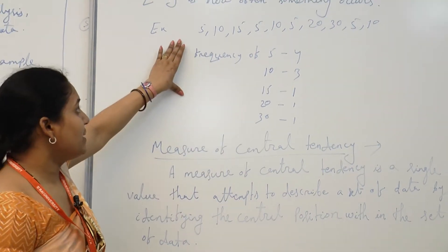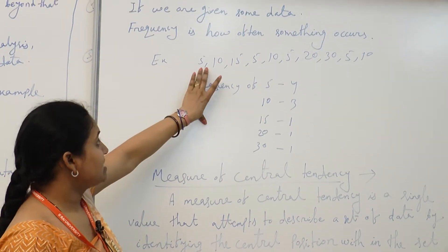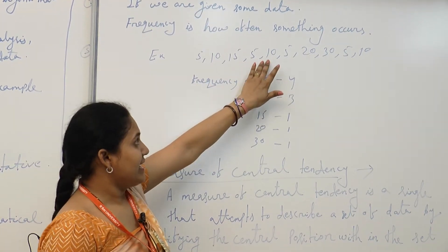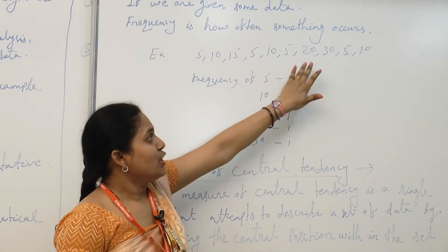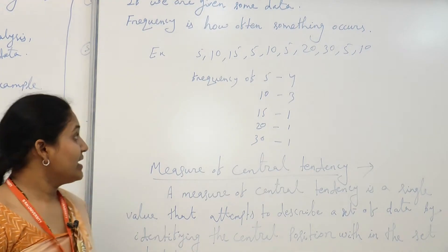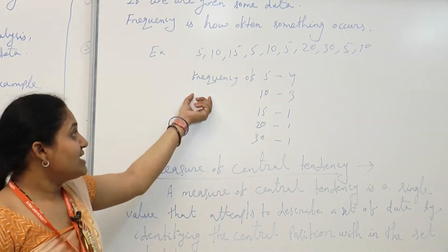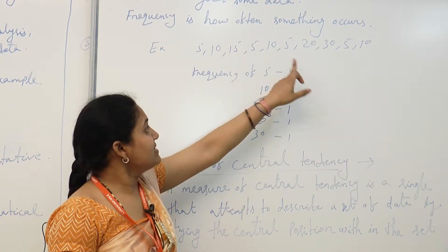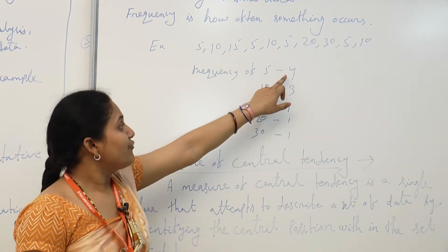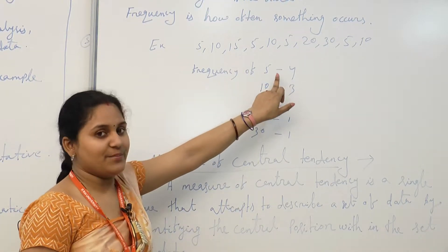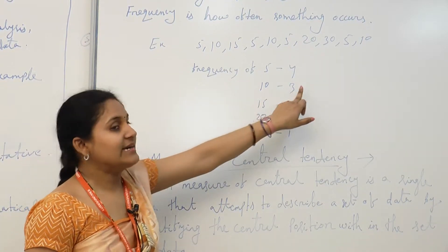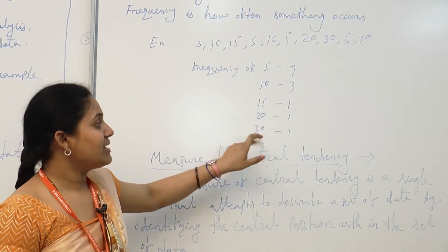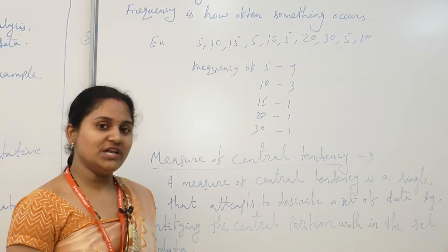In this example the data consists of 5, 10, 15, 5, 10, 5, 20, 30, 5, and 10. The frequency of 5 is 4, because 5 is used four times in this set. 10 is used 3 times, while 15, 30, and 20 are used only once.